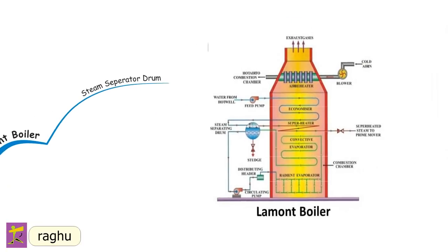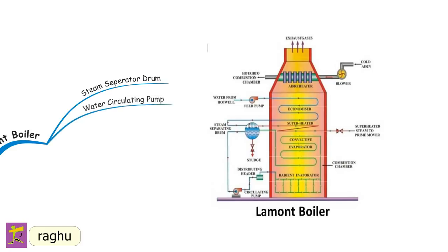The steam separator drum is placed outside the boiler assembly. It receives a mixture of steam and water from the evaporator tubes and feeds water from the economizer, where water particles present in the steam are separated. The centrifugal water circulating pump draws water from the drum through downcomers and circulates it by forced circulation at eight to ten times the weight of steam evaporated, which prevents overheating of the tubes.